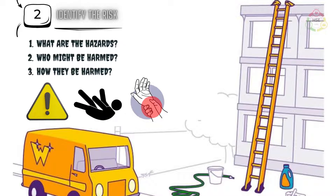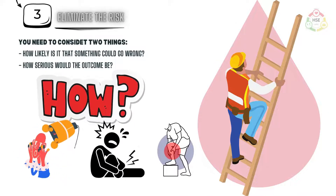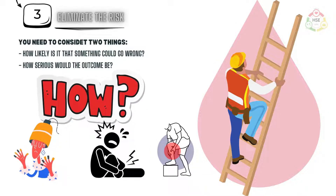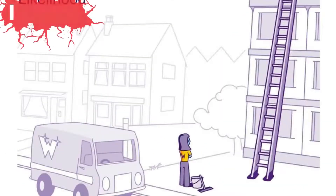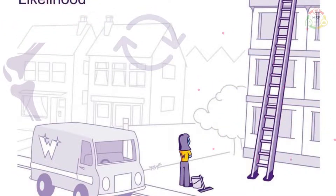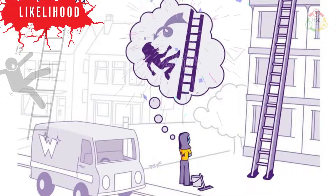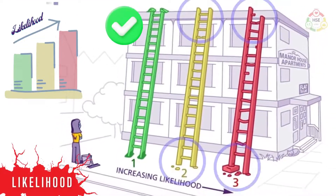Step two is to identify the hazard, who might be harmed and how they may be harmed. Step three is to eliminate the risk. For this you need to consider: one, how likely is it that something could go wrong; two, how serious would the outcome be. Likelihood is to be examined closely while conducting a risk assessment. The likelihood of the hazardous event will increase if control measures and equipment being used are not effective.